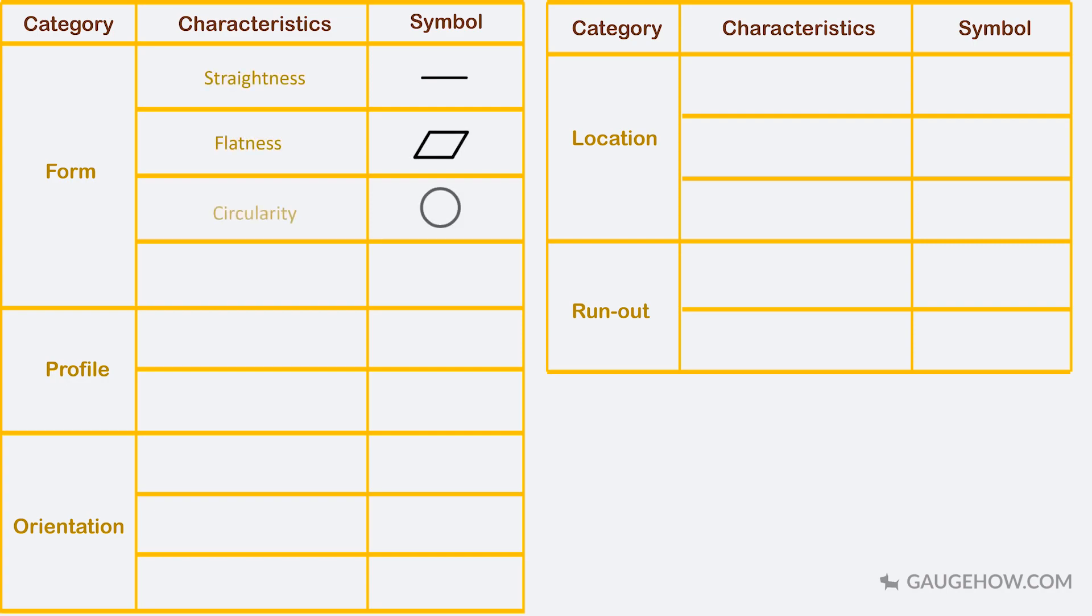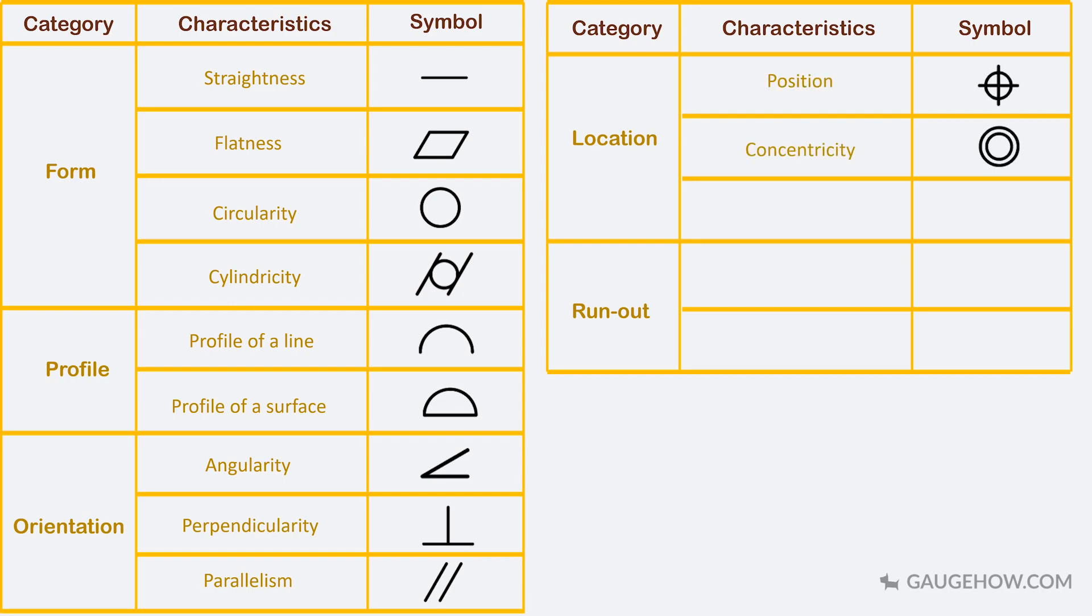In profile, there are two symbols: profile of a line and profile of a surface. Orientation has three symbols: angularity, perpendicularity and parallelism. In location, there is position, concentricity and symmetry. And in run-out, there is circular run-out and total run-out.